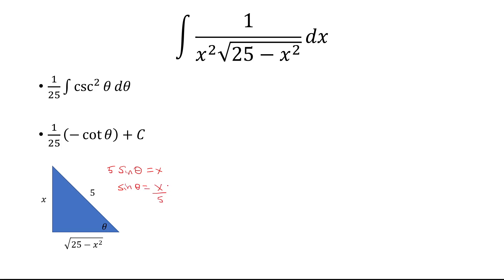So this is opposite over hypotenuse. And to complete the square, or to do the Pythagorean theorem, we have the square root of 25 minus x squared for this missing side.